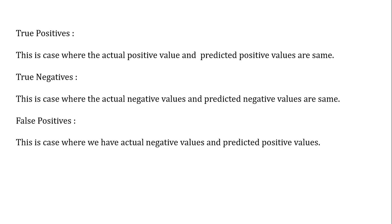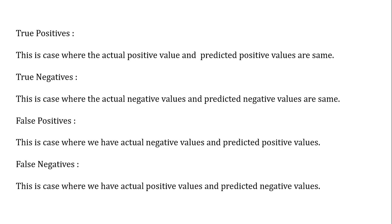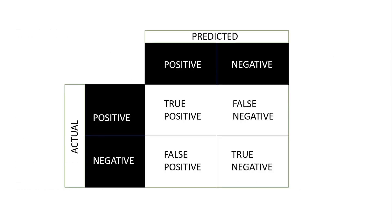Then we have false positives — in this case where we have actual negative values, so y is the actual negative value and y_pred is going to be positive. Similarly, we have false negatives — in this case we have actual positive values but the machine learning algorithm is predicting negative values. This is the graphical representation of the confusion matrix, with actual values on the left and predicted values across the top.